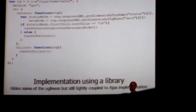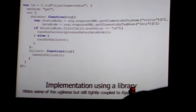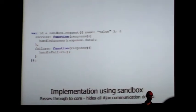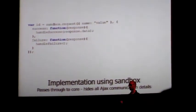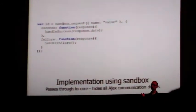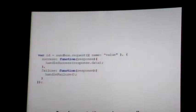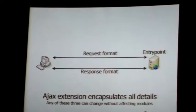Using a library makes things a little better — you're not going to the super low level — but you still have the entry point, request format, and response format embedded within the JavaScript. Using the library itself doesn't free you up. What you actually want is something where you say: I'm making a request, here's the data I'm sending in, this is the data I'm expecting to get out — none of those three details exposed. Now I can swap underneath and this code doesn't have to change.